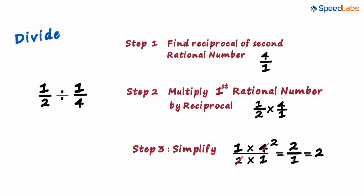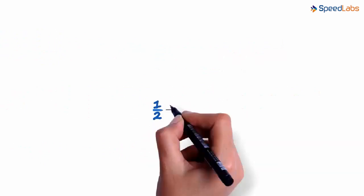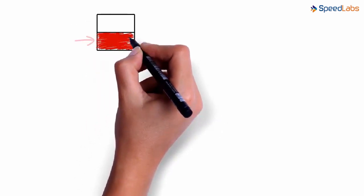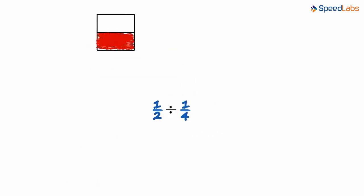How do we understand this? What does the answer two actually mean? What we want to understand is one by two divided by one by four. Assume we have a square that is divided into two equal parts. To represent half which is one part out of two, we color this part. So one out of the two parts of the square is colored.